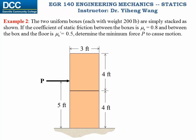Let's look at example two. There are two uniform boxes — they look identical, with the same dimensions and the same weight of 200 pounds each, simply stacked one on top of another. The coefficient of static friction between the boxes is μs = 0.8, and between the box and the floor is μs' = 0.5. We are asked to determine the minimum applied force P to cause motion. Since the problem doesn't specify what kind of motion, we need to consider all possible motions.